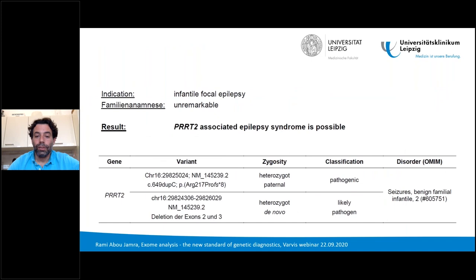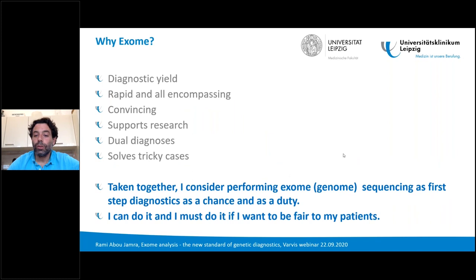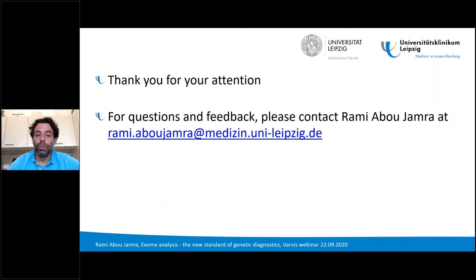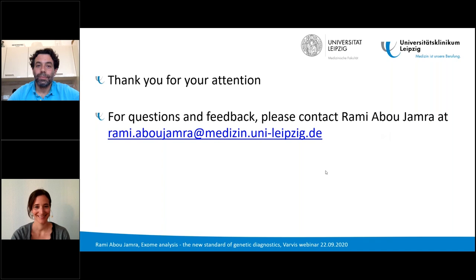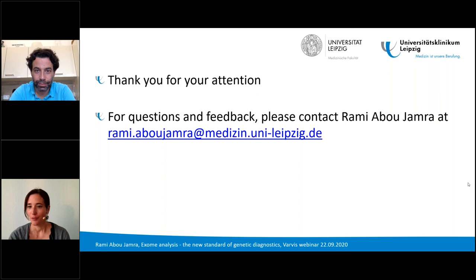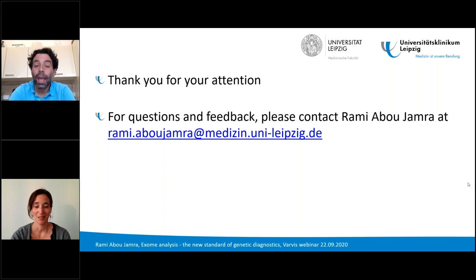Taken together, I consider performing exome — and we should soon move to genome sequencing — as a first diagnostic step, as a chance to do a good job, but also as a duty. If you can do it, you must do it to be fair to your patients. Thank you for your attention. A question from the chat: how long does it take to review a whole exome case on average? If it takes you more than 15 minutes, you risk reporting false positive results. I would say between 5 and 15 minutes — and it's much easier if you have a trio.